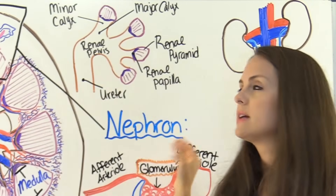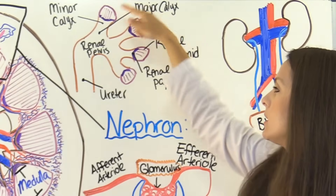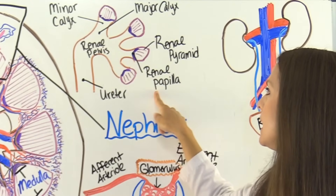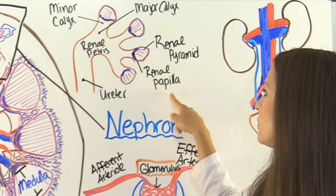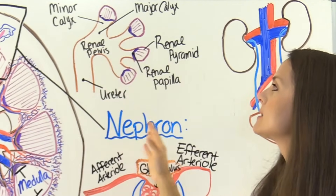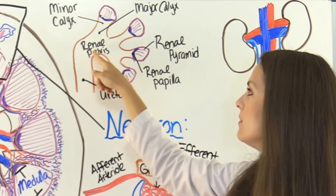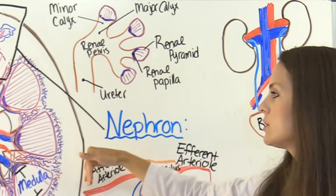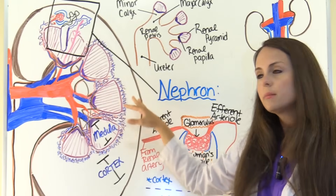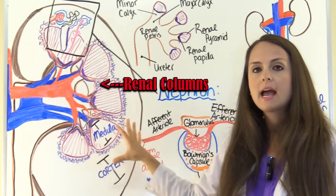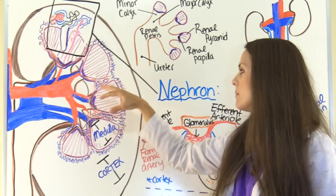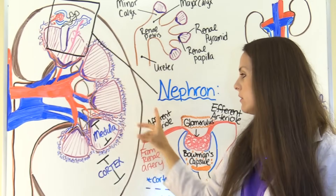Once urine is created, it will drain down through these areas. You have your renal pyramids, then your renal papilla — which is the tip of the pyramid — then when your urine comes down through the renal papilla, it will go into the calyxes: the minor calyx and the major calyx. Then the urine will progress down through the renal pelvis, which goes down into your ureter, then into the bladder, and then the urethra. In between your renal pyramids are renal columns, which contain a network where your renal artery and renal vein branch off into capillaries and arterioles.